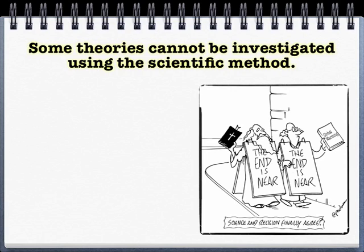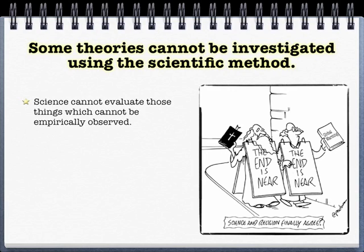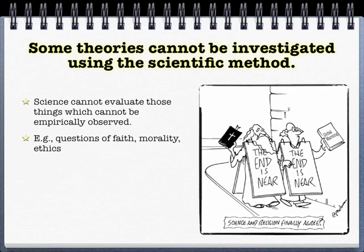Not everything can be studied with science, and that's important to understand. If you can't empirically observe it, then your theory cannot be evaluated scientifically, which is frustrating to some people. But if you're trying to explain something with a hypothesis that there is no way to empirically test, then it can't go toe to toe with a scientific theory. You can certainly have your explanations, but those are non-scientific explanations. Questions of faith, morality, and ethics are important, but can't be evaluated empirically, and so they don't belong in a scientific conversation.